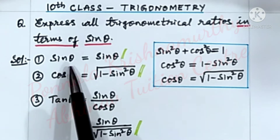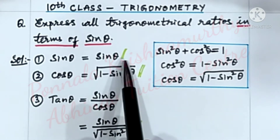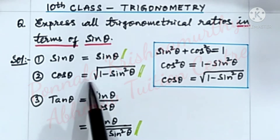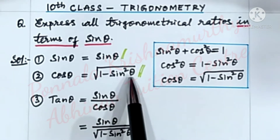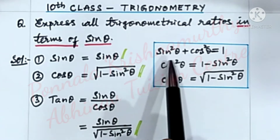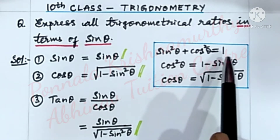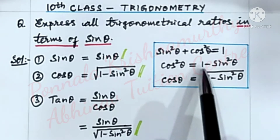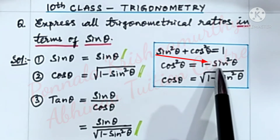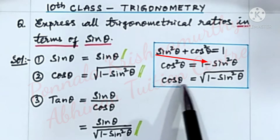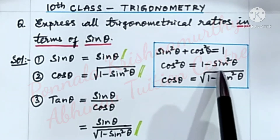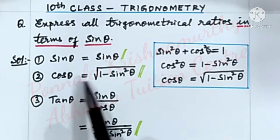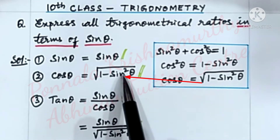Number one: sin theta is equal to sin theta. Two: cos theta is equal to under root 1 minus sin square theta. We know that sin square theta plus cos square theta is equal to 1, then cos square theta is equal to 1 minus sin square theta, then cos theta is equal to under root 1 minus sin square theta. So in place of cos theta we can write under root 1 minus sin square theta.